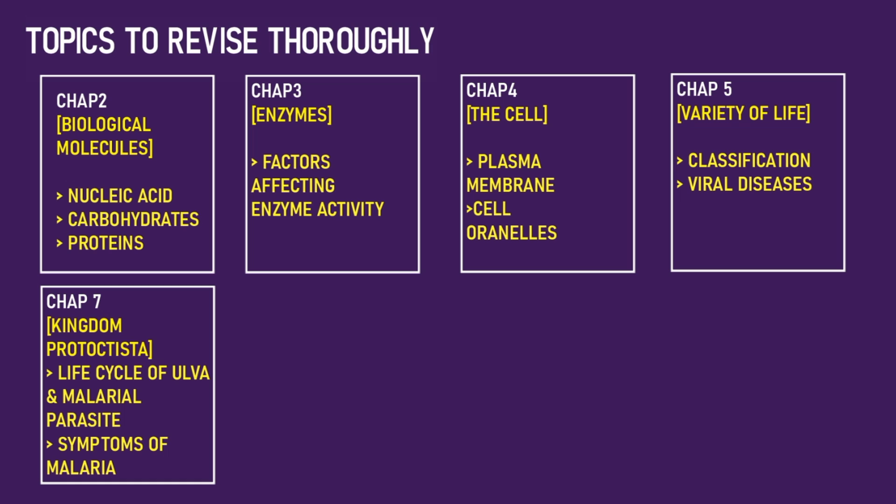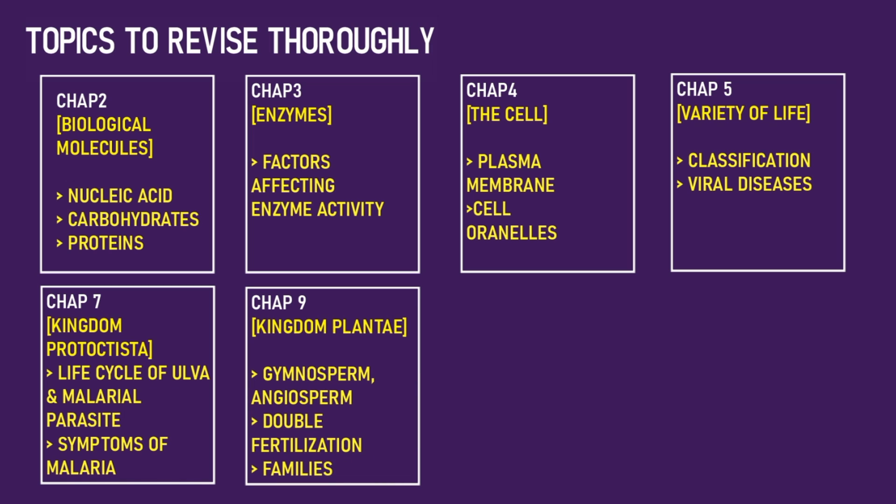Symptoms of Malaria. Chapter 9, Kingdom Plantae — it's the most important chapter. Some of the important topics are gymnosperm and angiosperm, double fertilization, families, floral formula, and botanical names — all are included.